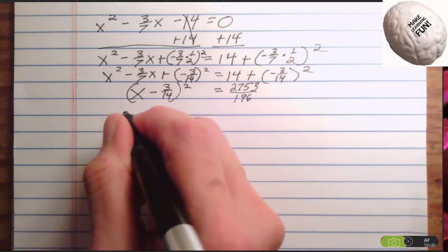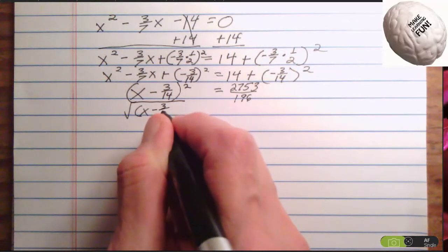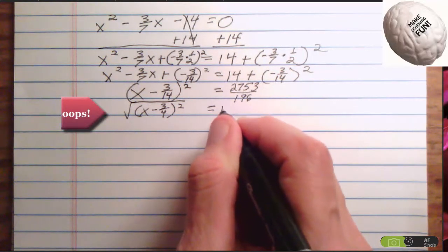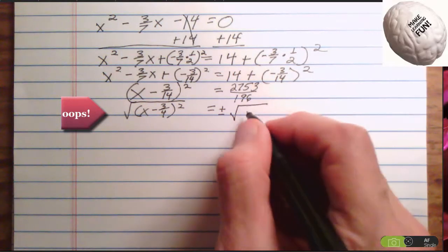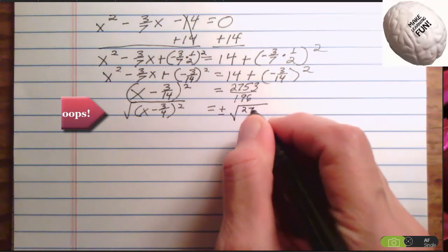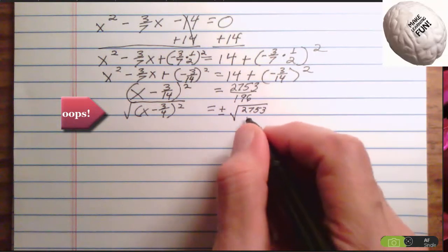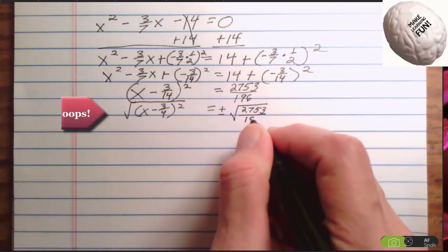Okay. So I'll take the square root of parentheses x minus 3 14ths parentheses closed squared equals plus or minus the square root of 2753 over 196.